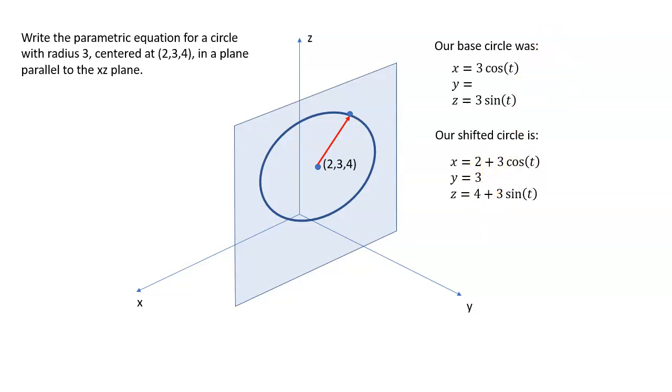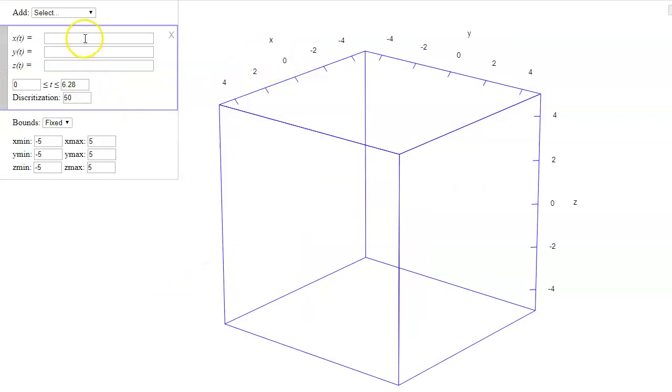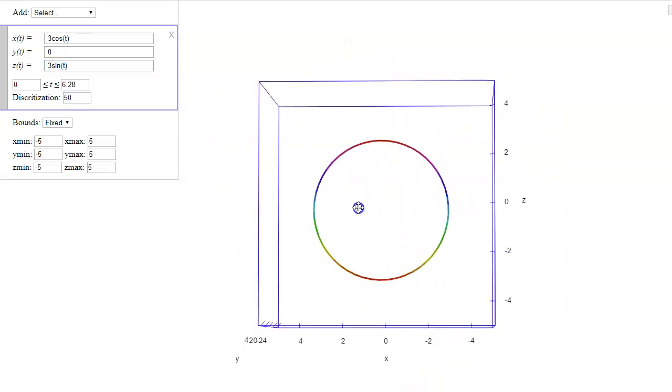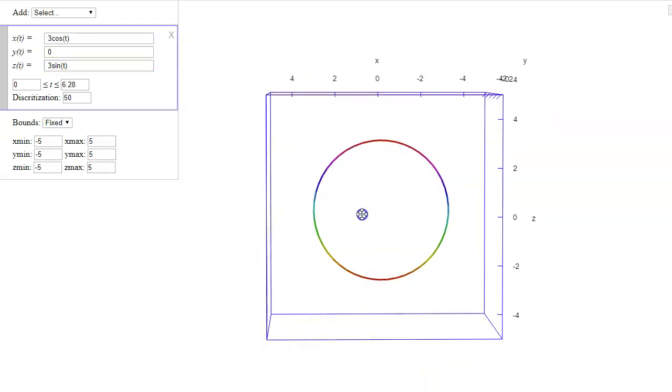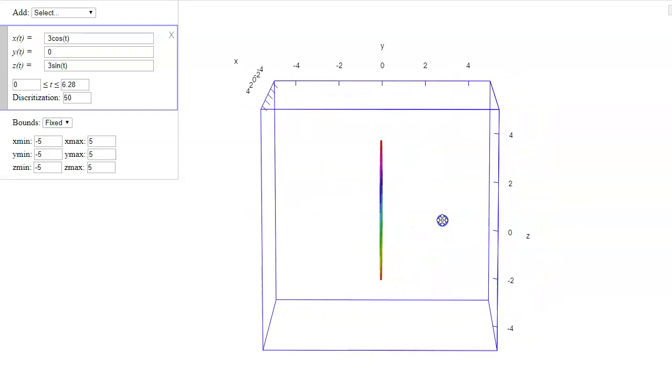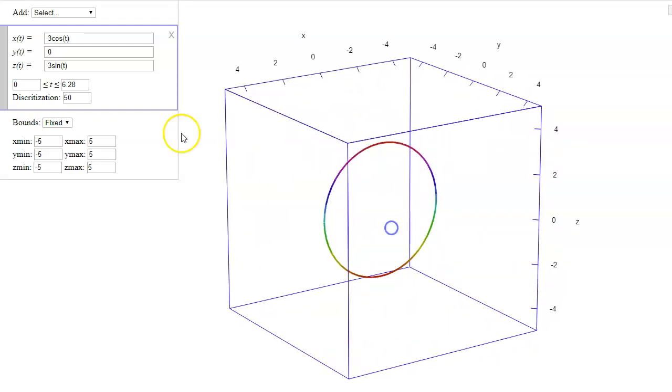Let's just verify that this is correct by graphing it. So our base circle, remember, was 3 cosine t and 3 sine t. And that gives me a circle of radius 3 in x and z, originally at a y value of 0. And then we shifted these.